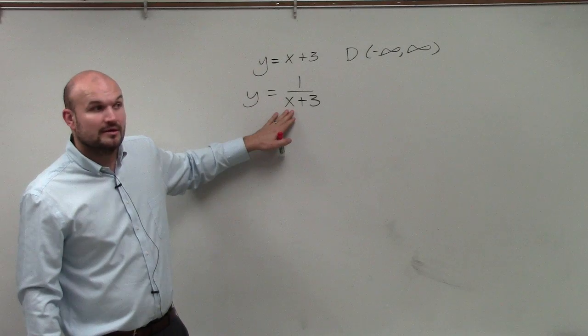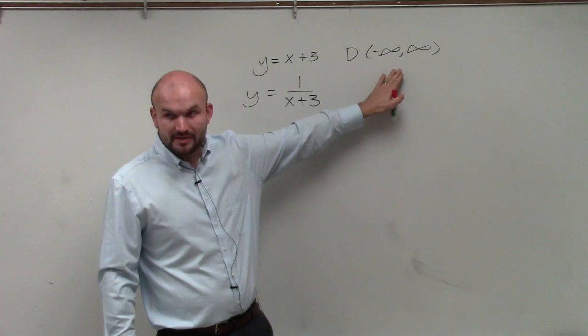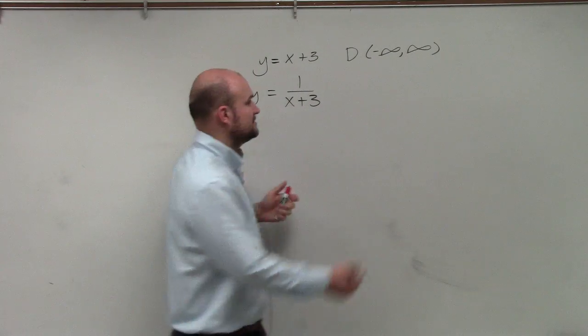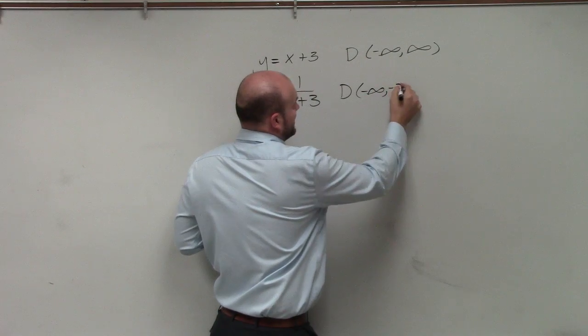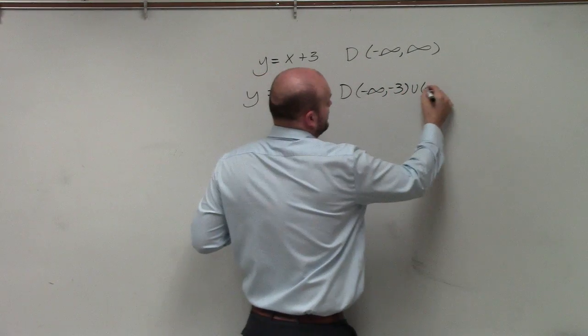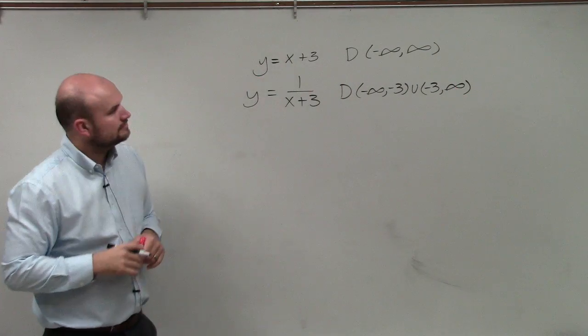That number is negative 3. So my domain is all real numbers except for the number negative 3. So the way that we write it is negative infinity to negative 3 union negative 3 to infinity.